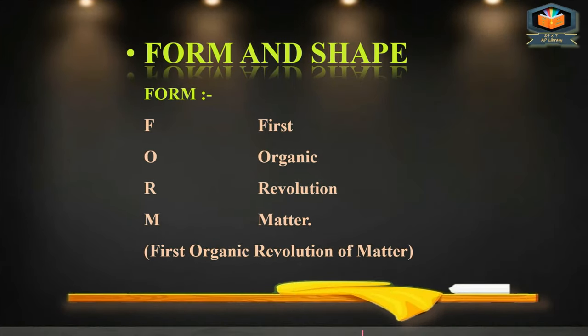After line, we have Form and Shape. FORM stands for: F — First, O — Organic, R — Revolution, M — Matter. The meaning of form is 'First Organic Revolution of Matter.'